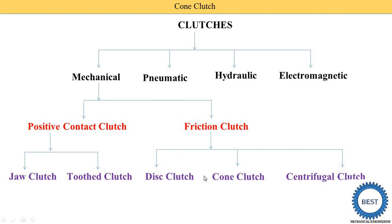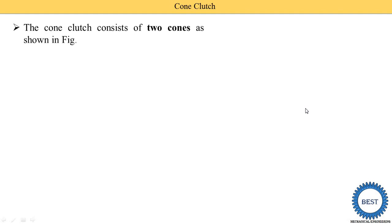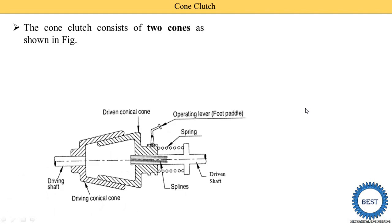In the last video, I discussed about the disc clutch. If you want to watch the video about the disc clutch, the link is provided in the description as well as in a card. So, why is its name given the cone clutch? Because the cone clutch consists of two cones, that is why its name is given the cone clutch.